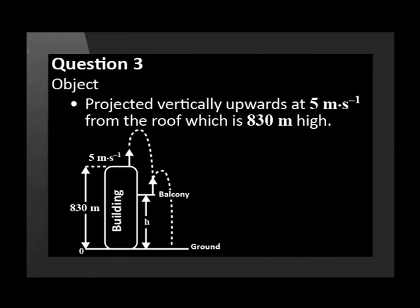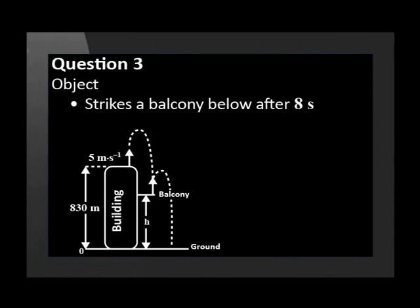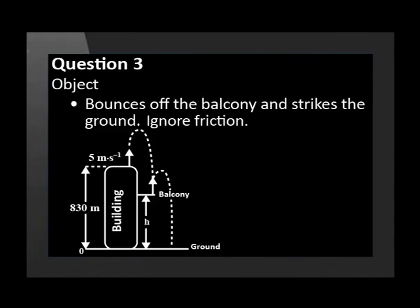An object is projected vertically upwards at 5 meters per second from the roof of a building which is 830 meters high. It strikes the balcony below after 8 seconds. The object then bounces off the balcony and strikes the ground as illustrated. Ignore the effects of friction.